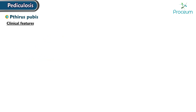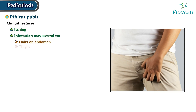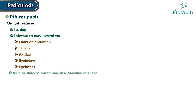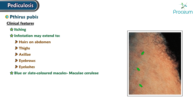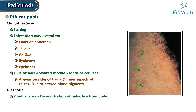Clinical features of Phthirus pubis include itching of the pubic regions. Infestation may extend to hairs on the abdomen, thighs, axillae, eyebrows, and even eyelashes. Blue or slate-colored macules, known as maculae ceruleae, may appear on the sides of the trunk and inner aspects of the thighs due to altered blood pigments. Diagnosis is confirmed through demonstration of pubic lice from the body.